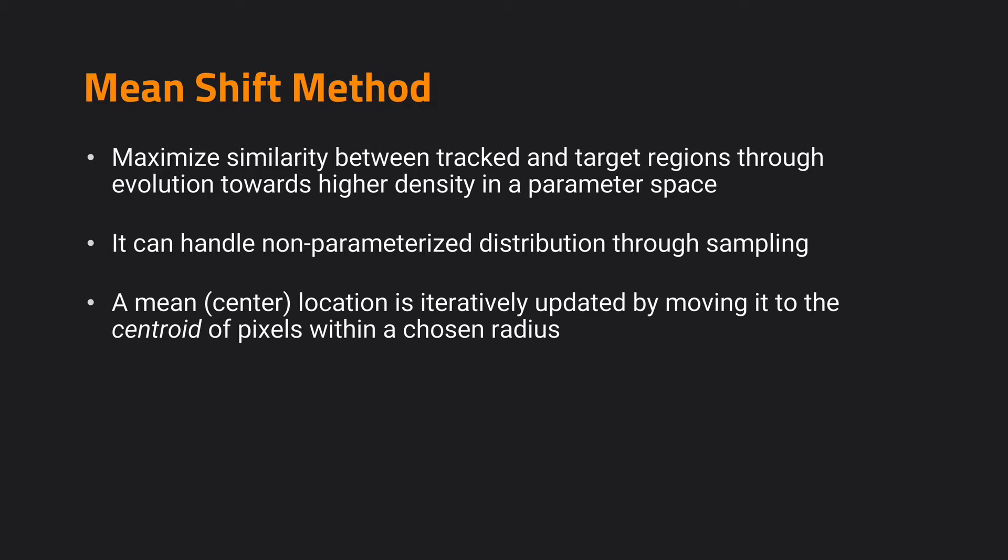That is, we do not need to know the exact formulation for that parameter space, and we only need to adjust our model based on samples in that space. The reason they call it mean-shift is that in this algorithm, a mean or center location is iteratively updated by moving it to the center of pixels within a chosen radius or within a region of interest.